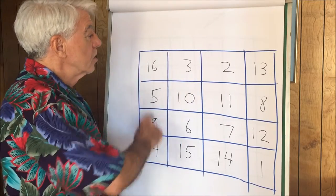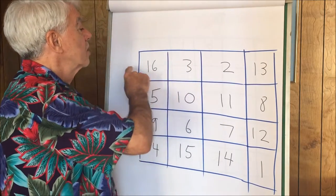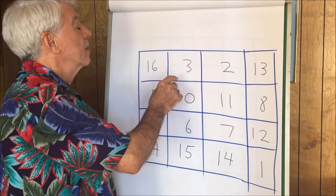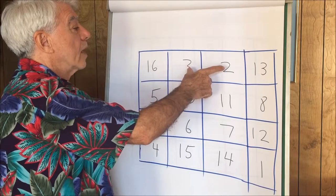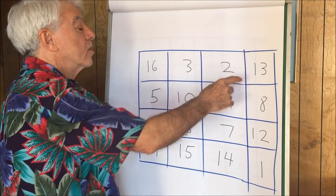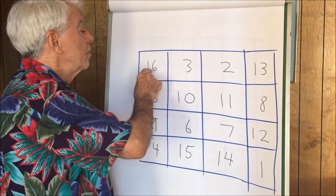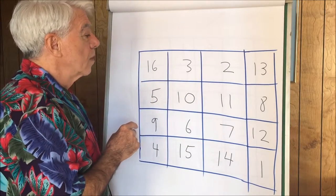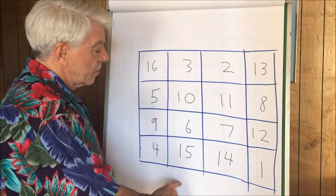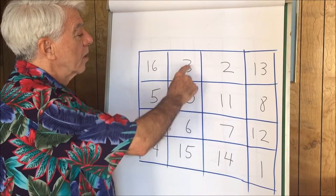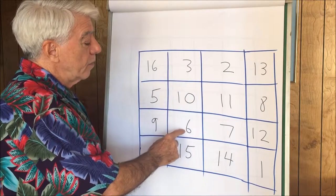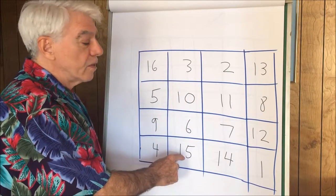These are columns, these are rows. Let's take this first row and see what the sum is. We have 5 here and 13 makes 18 plus 16, 34. Let's take this column: 3 and 10, 13, plus 6, 19, plus 15, 34.